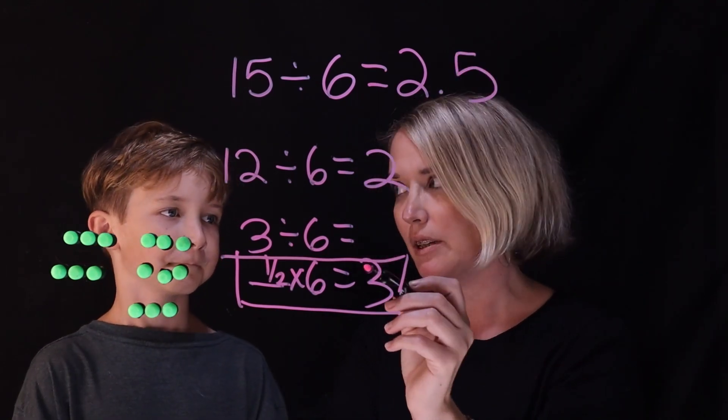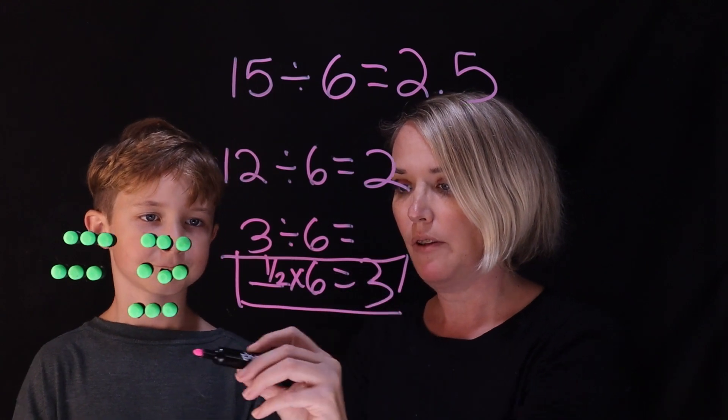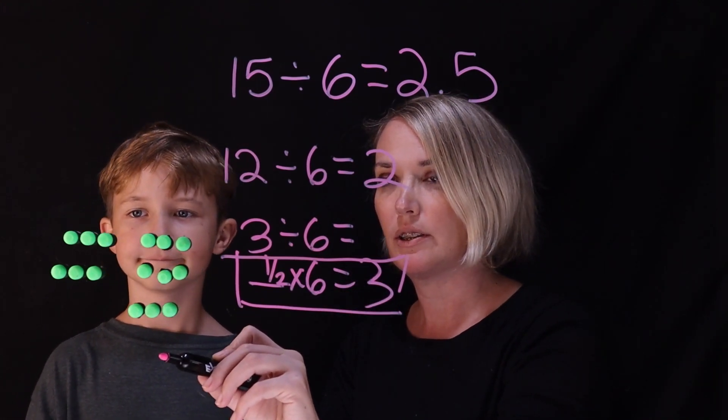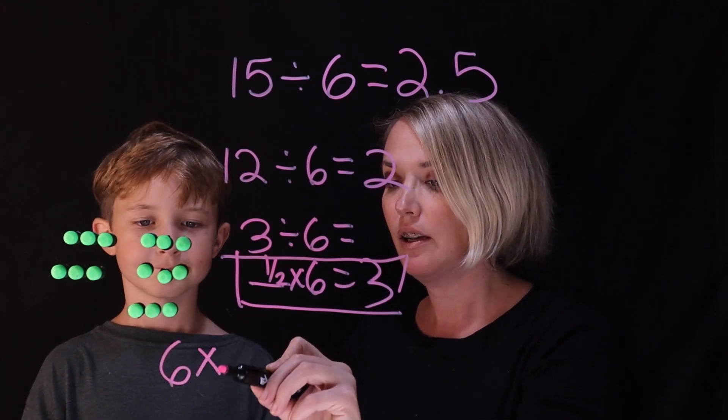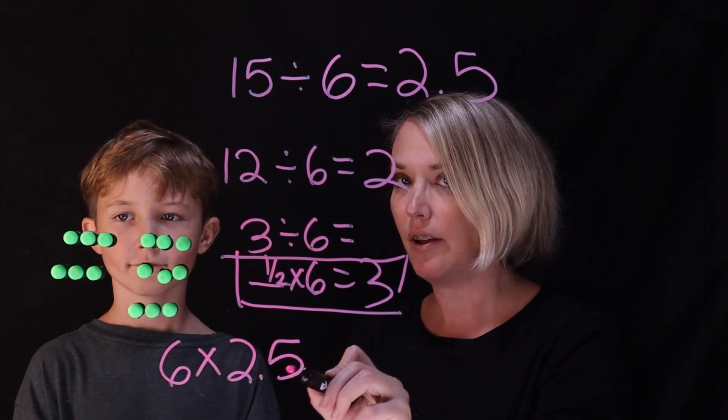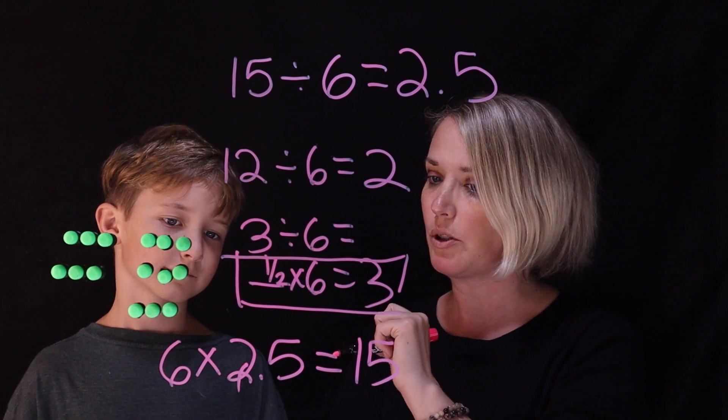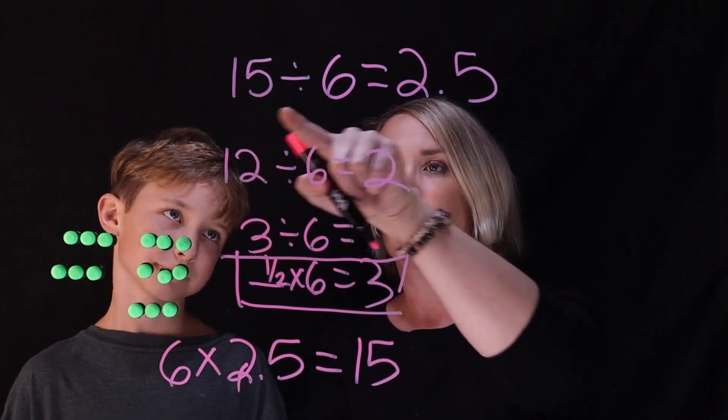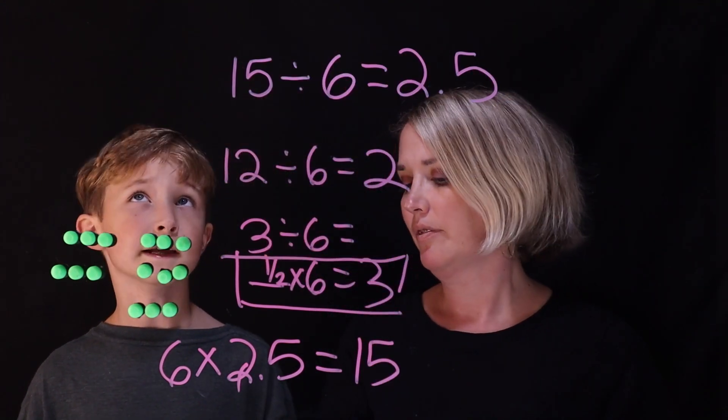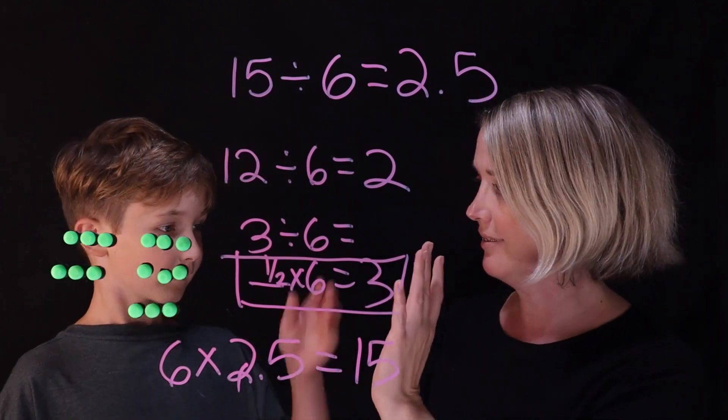Yeah. So that means, though, too, for people, it means 6 times 2.5 equals 15. Yeah. So we can think of them in terms of multiplication. But this is our final answer. Yeah. That was perfecto. Thank you.